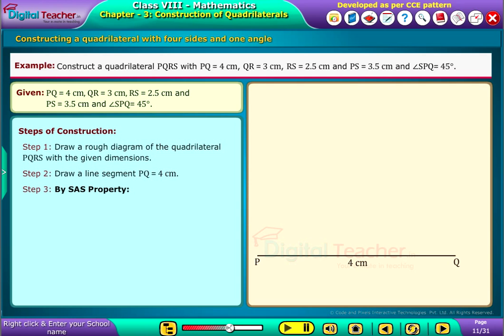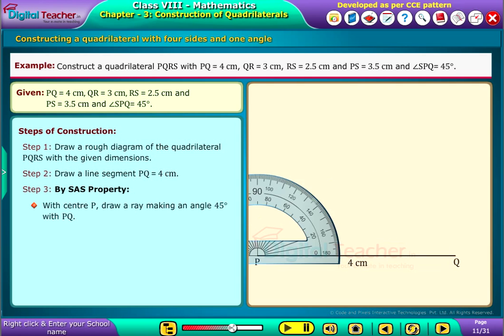Step 3, by SAS property. With center P, draw a ray making an angle 45 degrees with PQ.